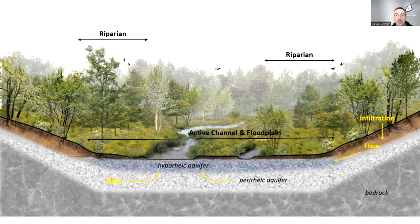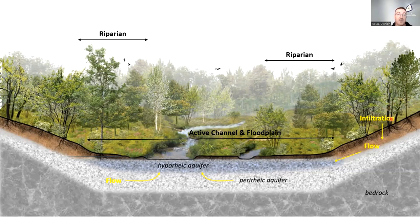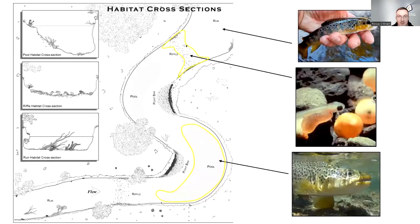During low-flow summer events you might wonder how we have water in the river even though we haven't had rain in weeks. The channel is fed by water from the subsurface and from water infiltrating over the land — water that may have fallen as rain in winter and slowly works its way down into the river.